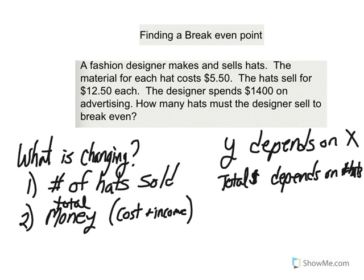Now let's take a look at Y equals MX plus B. We identified what X and Y are — what those variables mean. Now we have to identify what M means and what B means. We have two scenarios: one is cost, the other one is income.